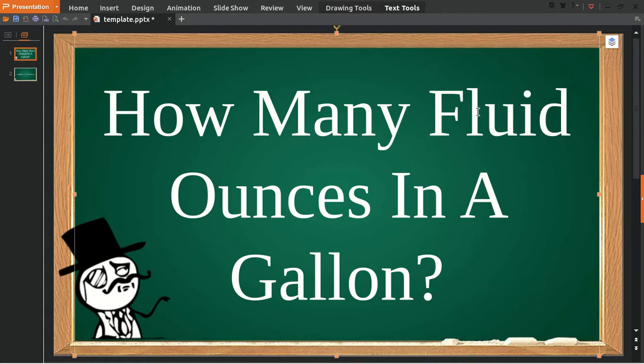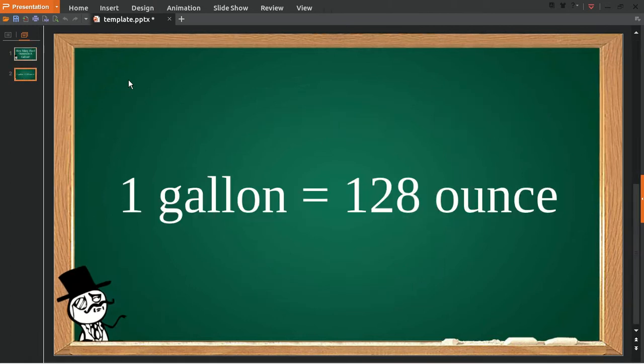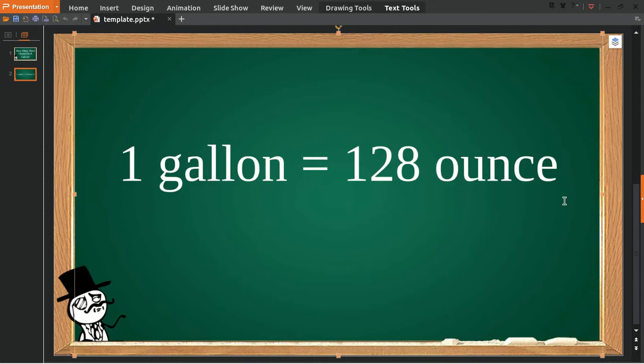The existence of fluid and not fluid is totally different. Well, let's answer this question. Here's the answer: one gallon is equal to 128 ounces. But what if you want to convert not just one gallon?